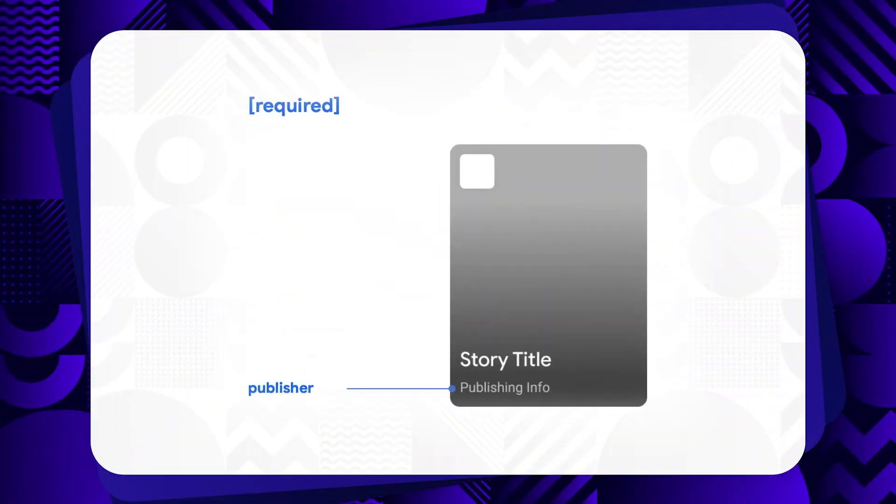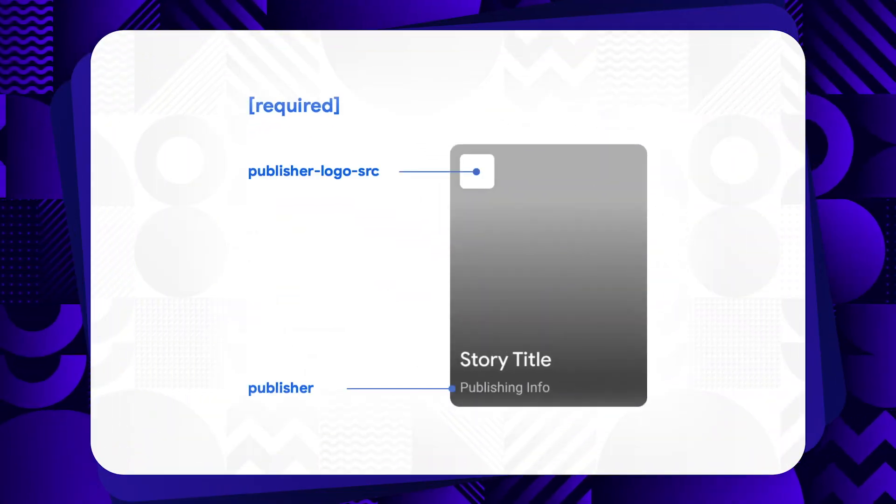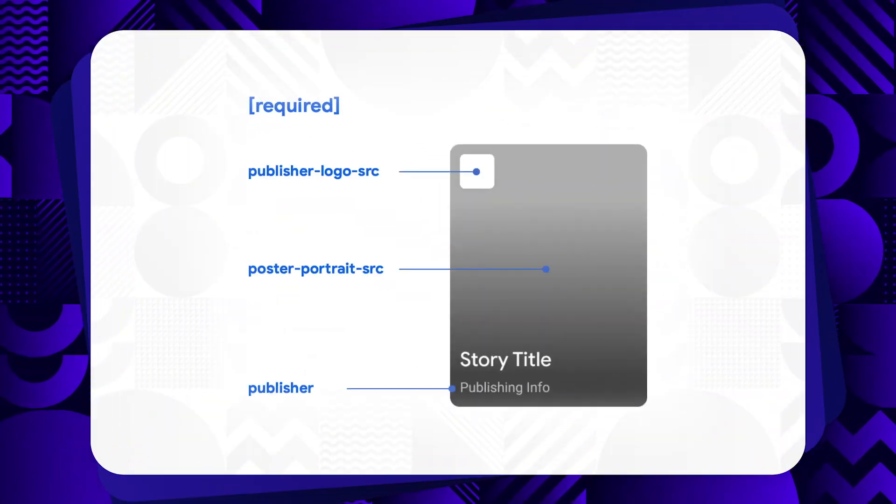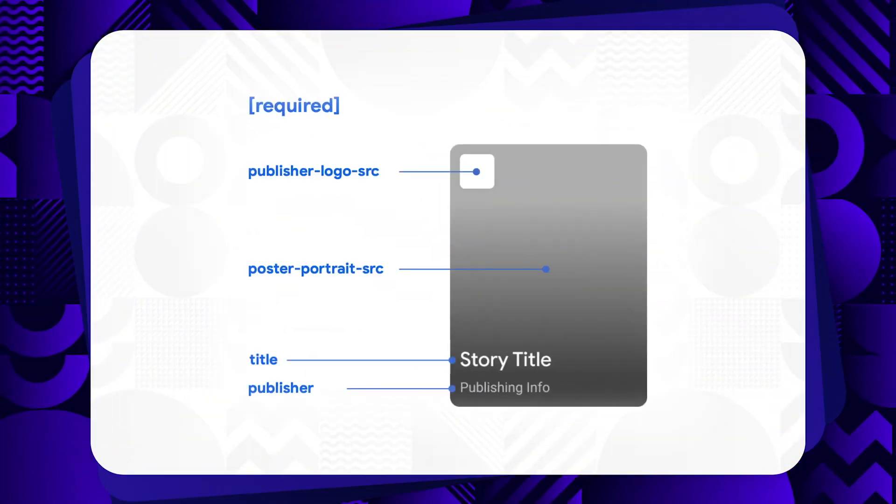For web stories to show on Google Discover, for example, the following fields are required: Publisher, Publisher Logo, Portrait Poster, and Title. All of these are used to render the story cover as seen in the Discover carousel, and it is the first thing a user sees to decide if they want to consume your story.